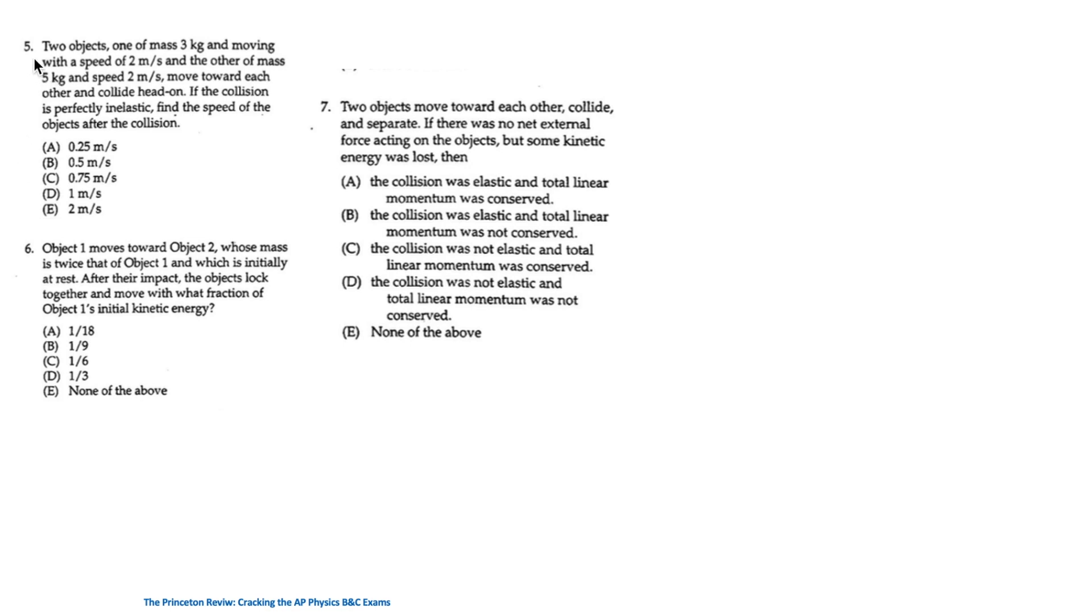For question 5, two objects, one of mass 3 kg moving with a speed of 2 m per second, and the other 5 kg with speed 2 m per second, are moving towards each other and collide head-on. If the collision is perfectly inelastic, find the speed of the object after the collision. These are the two objects moving towards each other. After colliding, it's perfectly inelastic, so they stick together and move with a common speed.